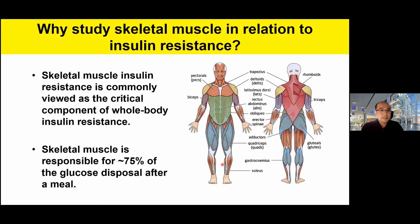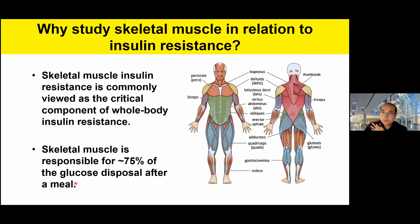As I mentioned, peripheral tissue insulin resistance is very important in the development of whole body insulin resistance and diabetes. One of the tissues my lab focuses on is skeletal muscle, for a couple of reasons. Number one, skeletal muscle insulin resistance is a critical component of whole body insulin resistance. Number two, more importantly, during insulin-stimulated conditions — for example, after a meal — skeletal muscle is actually responsible for the majority of glucose disposal.